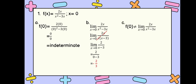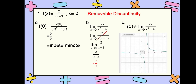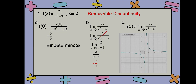As you can see, f of 0 is not equal to the limit of 2x over x squared minus 3x as x approaches 0. This further justifies that our function is discontinuous at x equals 0. If we try to graph our function, we can see that it is a removable discontinuity, as there is a hole in the graph. To make our function continuous, we use a piecewise function: f of x equals 2x over x squared minus 3x if x is not equal to 0, and negative 2 over 3 if x equals 0. The function is now continuous.